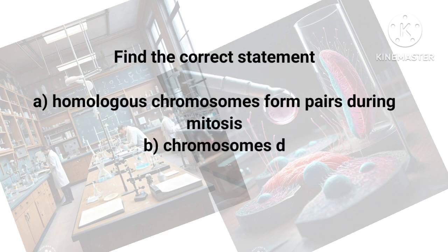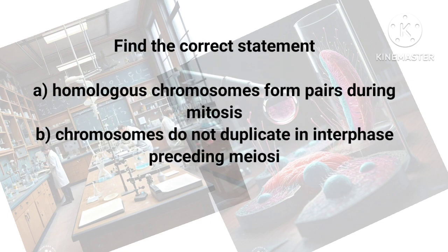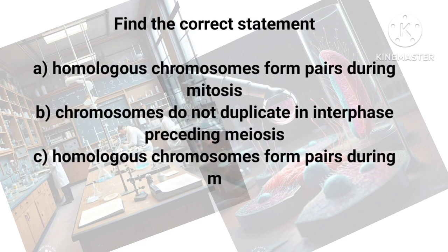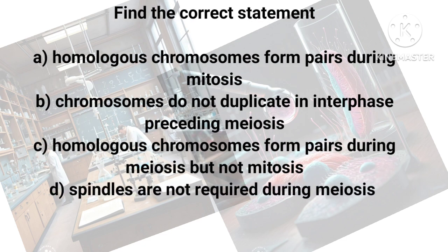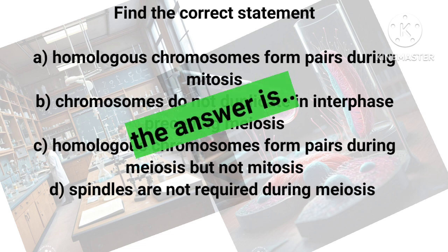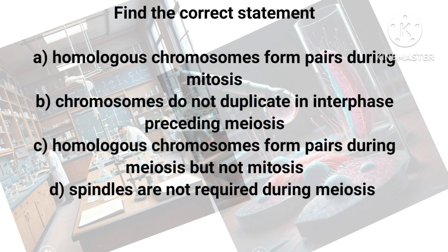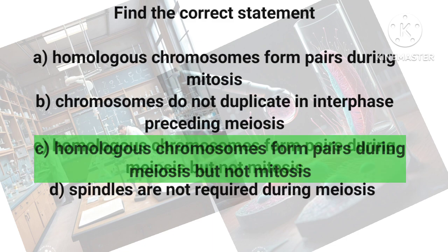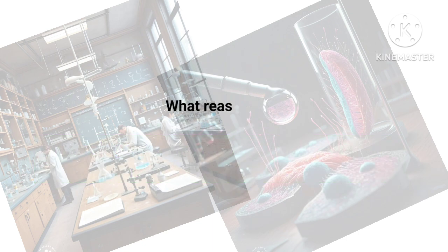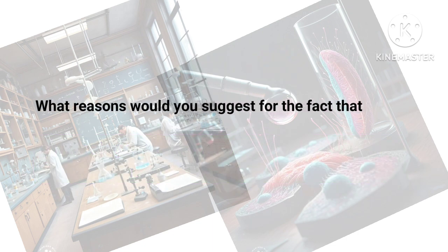Which of the following is the correct statement? Three out of these four statements are wrong and only one is correct. The correct statement is that homologous chromosomes form pairs during meiosis but not during mitosis.